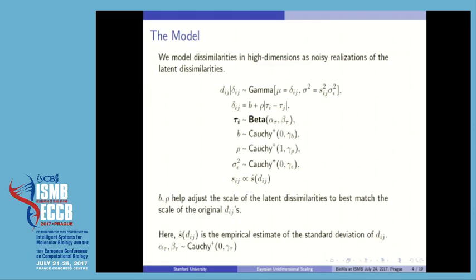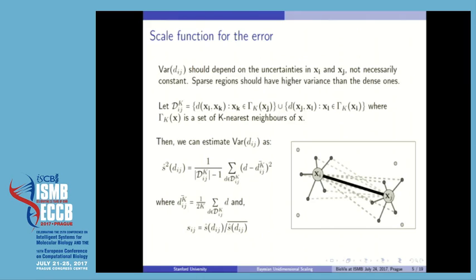The justifications for all the distributions and the priors are given in the paper. The important part of this model is that I allow for varying levels of error, here denoted by Sij. Sij are the factors for the scale of the noise term. Next I'll talk about how we estimate the scale function for the noise of Dij.